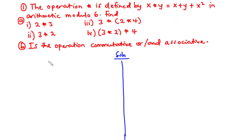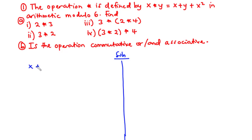In solving binary operations involving modulo arithmetic, we solve like normal binary operations. However, at the end, we convert our results to the given modulo. Here, we are working with modulo 6, so at the end we convert our answer to modulo 6. From the question, the binary operation is x star y equals x plus y plus x squared.